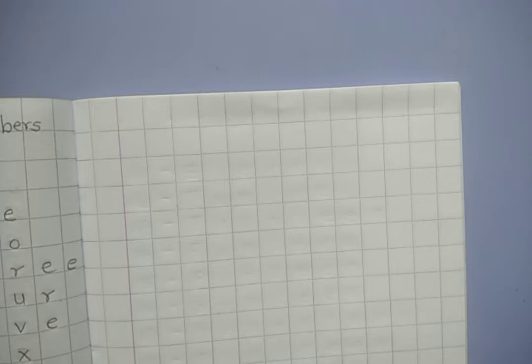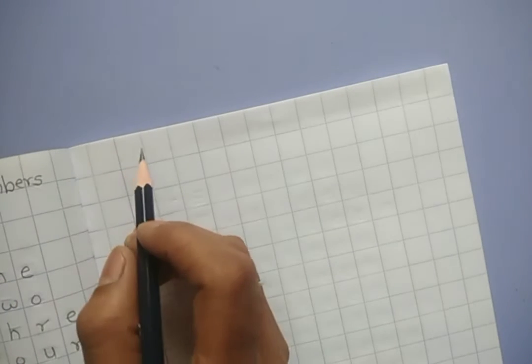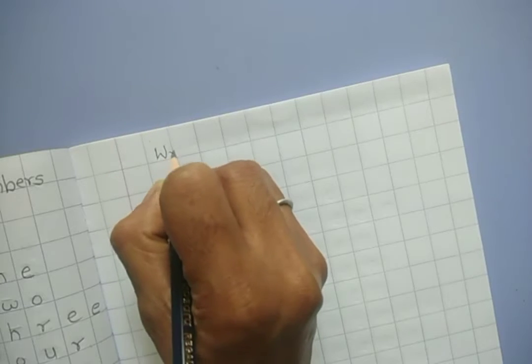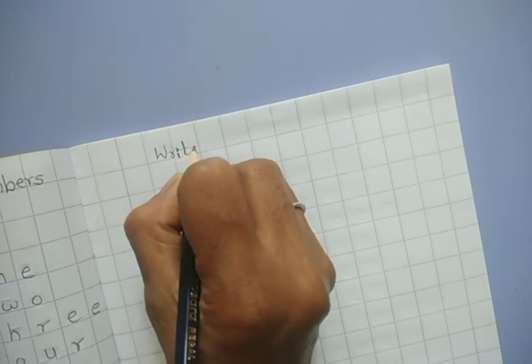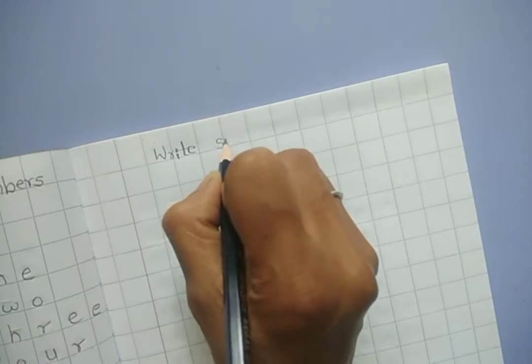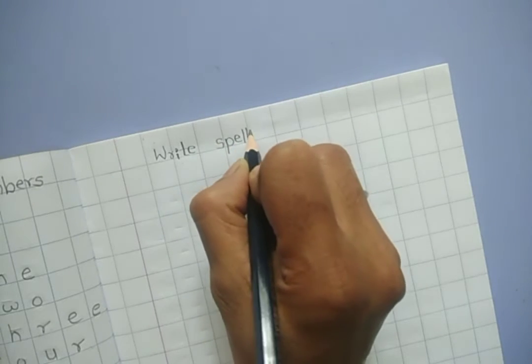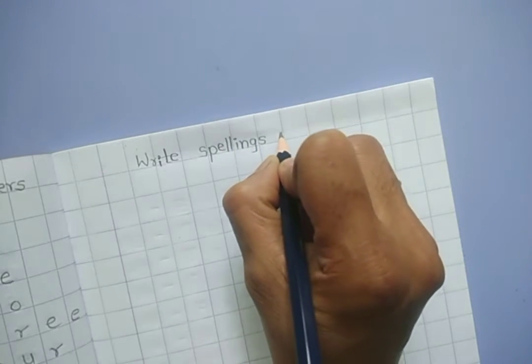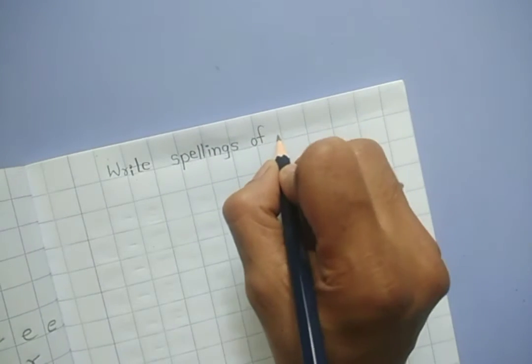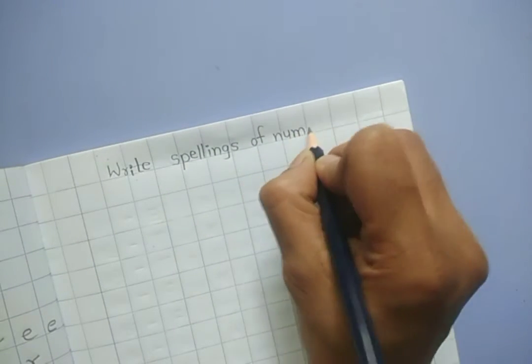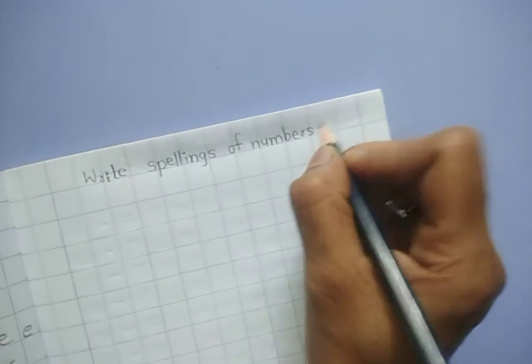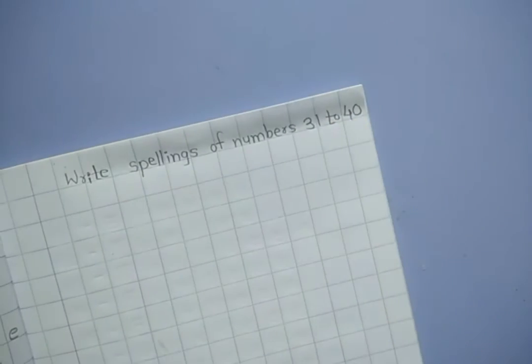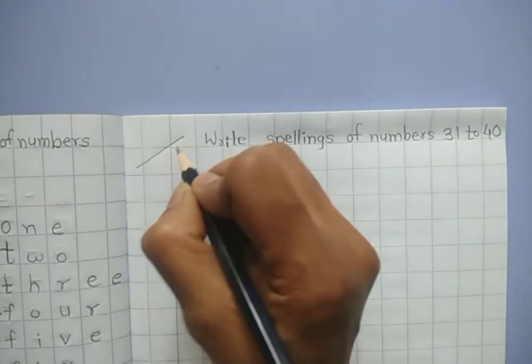Take out your maths notebook and here you have to write the heading. W-R-I-T-E, write S-P-E-L-L-I-N-G-S spellings O-F of N-U-M-B-E-R-S numbers. 31 to 40 and here you have to mention the date of today.